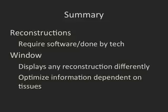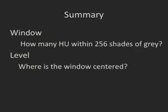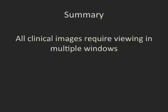To summarize: reconstructions of CT scans require specialized software and are usually done by the technologist on the raw data. But the window allows you to change the display of any reconstruction so that we can maximize the information available to interpret it, depending on the tissues we want to look at. The window is how many Hounsfield units we wish to look at within those 256 shades of grey — the narrower the window, the more contrasty the image and the more subtle the changes you'll be able to see. The level is where we center that window. To maximize diagnostic information from any CT scan, all clinical images require viewing on multiple windows.